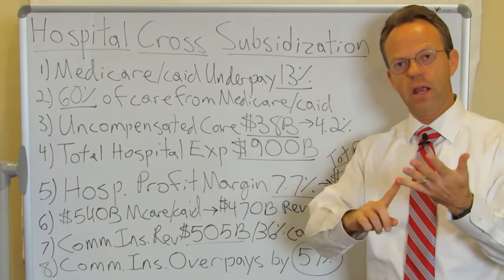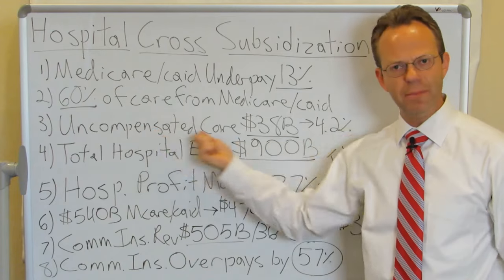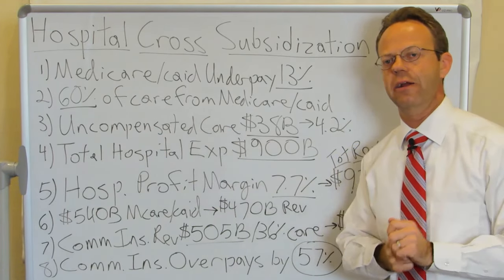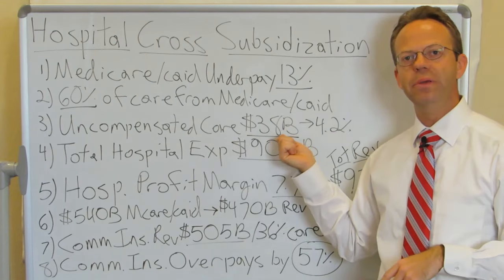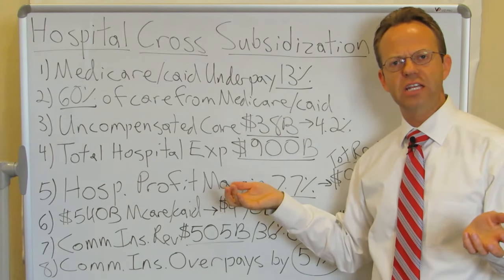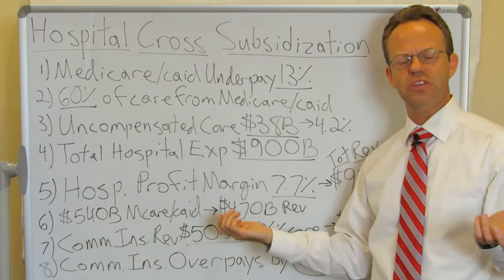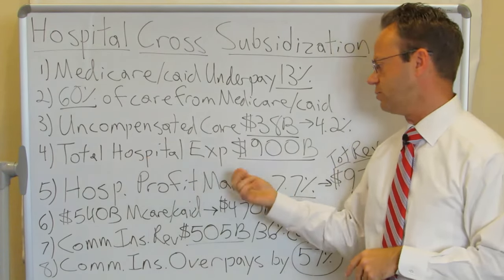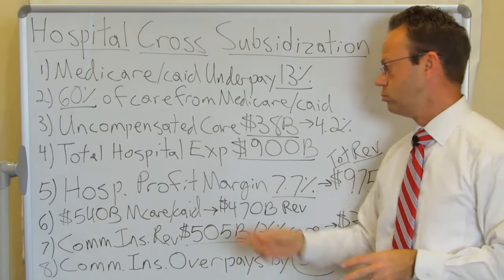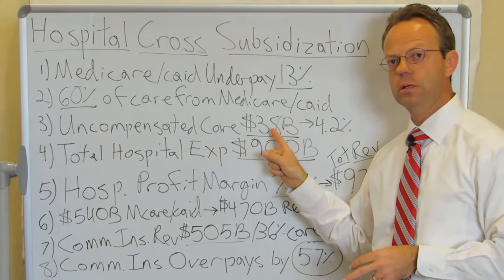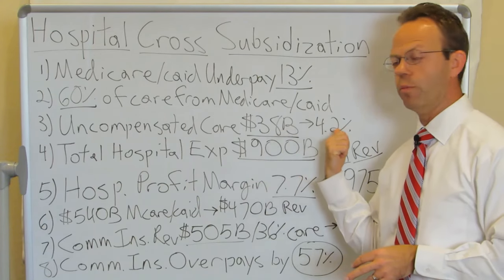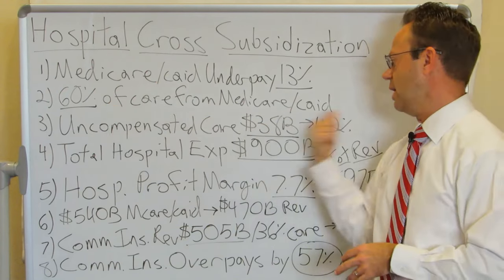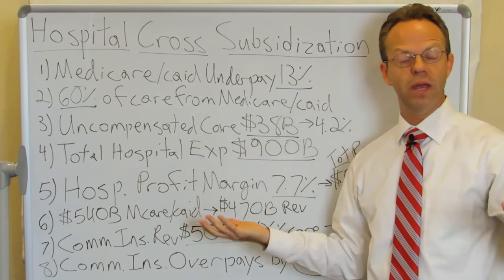There's also Medicare and Medicaid, commercial insurance, and then just non-payment — patients that come in and don't pay at all. That's uncompensated care, which totaled $38 billion. To figure that out as a percentage, we need total hospital expense, which was $900 billion. So uncompensated care is $38 billion divided by $900 billion — that's 4.2%. The hospital gets 60% of their business from Medicare and Medicaid and 4.2% from people who just don't pay at all.